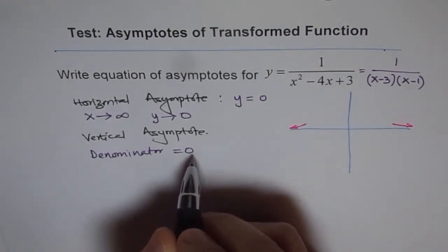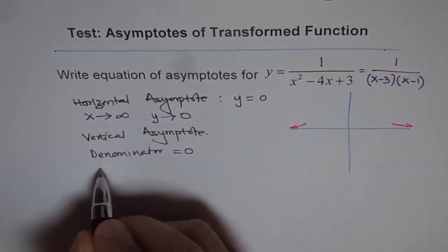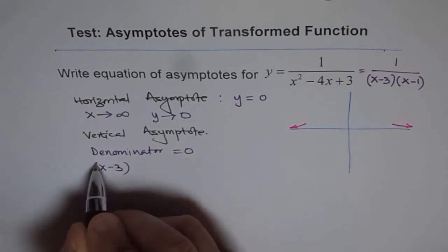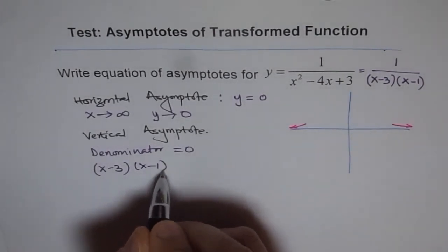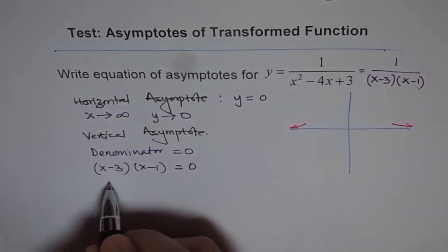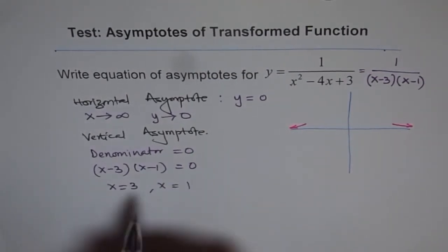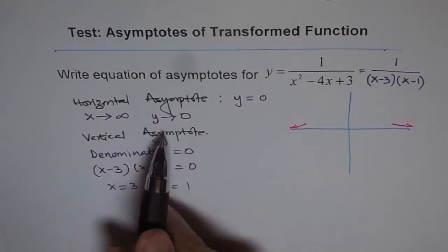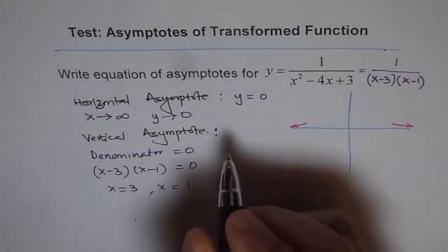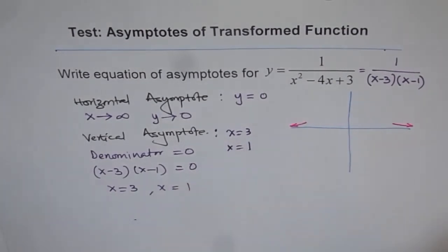In this case, the denominator is (x minus 3) times (x minus 1). For this to equal 0, x must equal 3 or x must equal 1. These are the two points where we have vertical asymptotes: x equals 3 and x equals 1.